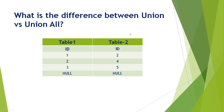Here we see the input data. Table one has a single column with values 1, 2, 3, and NULL. Table two also has a single ID column with values 2, 4, 5, and NULL. Let's understand how UNION and UNION ALL are going to work.